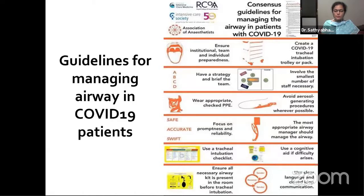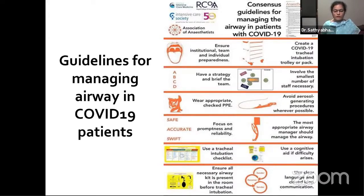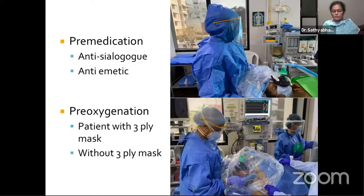Disadvantages of the microscope cover are that the holes are on different layers of the plastic cover, creating many folds that affect visibility and maneuvering of the endotracheal tube. Hence we modified the microscope cover to have two large openings on the top layer for the anesthetist's hands and one large opening on the side for the technician to pass intubation aids. For conduct of anesthesia, the Royal College of Anesthesiologists' guideline for managing airway in COVID-19 patients emphasizes: institutional and individual preparedness, having a strategy, briefing the team, checking PPE, and using a tracheal intubation checklist.